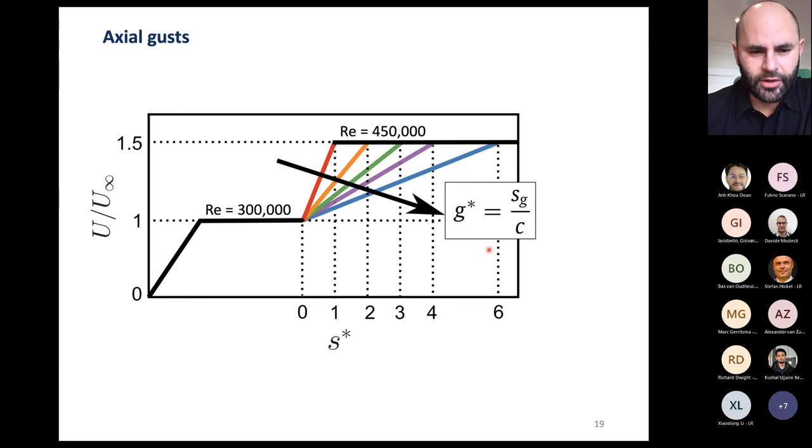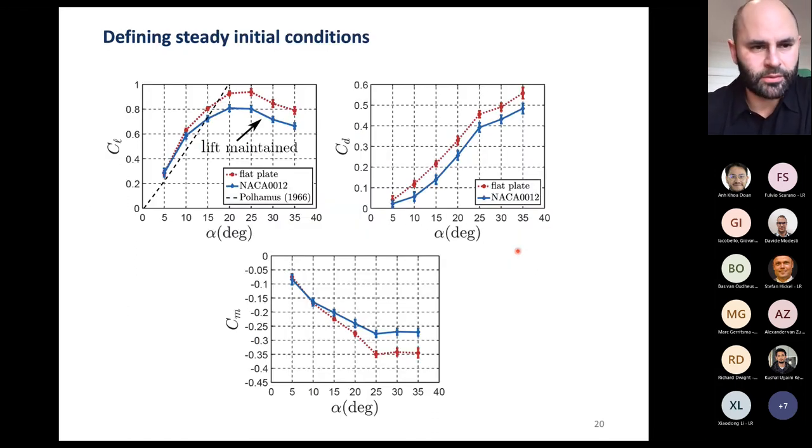So here we have a representation of the axial gust program. So you start the model from rest, you hit effectively a steady Reynolds number where the flow has relaxed to quasi steady conditions. And then you hit this initial condition, if you will, here with a steady, a constant acceleration. And until you reach a new terminal velocity of 50% higher than that of the initial condition. And of course, you can do it with more aggressive accelerations or slower accelerations, which we prescribe as G star, which is the length of the gust normalized by the mean chord of our body. Again, if you have any questions, just jump in. It wouldn't be an issue to answer.